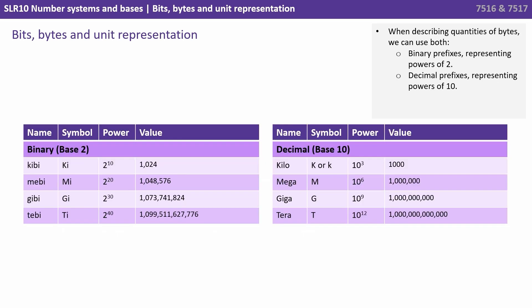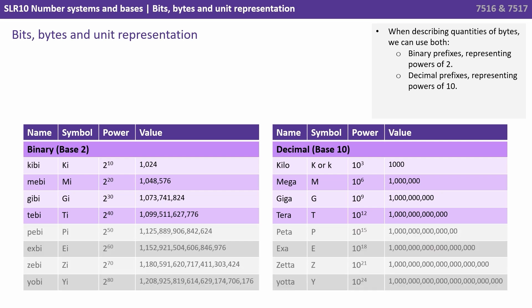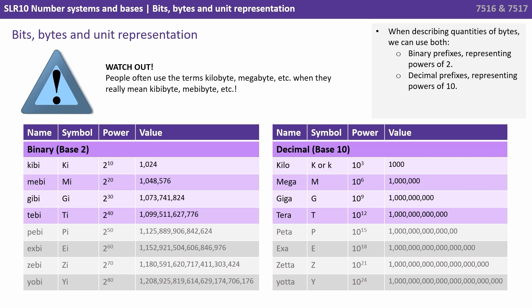When describing quantities of bytes, we can use both binary prefixes representing powers of two, and decimal prefixes representing powers of ten. The first four rows in each table are the ones you need to be aware of for the exam. Be careful here — people often use the terms kilobyte and megabyte when what they really mean is kibibyte and mebibyte. This is a common accepted misconception which has fallen into common use, but in the exam you must appreciate the difference.